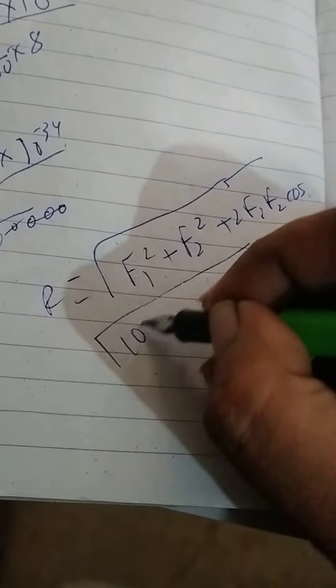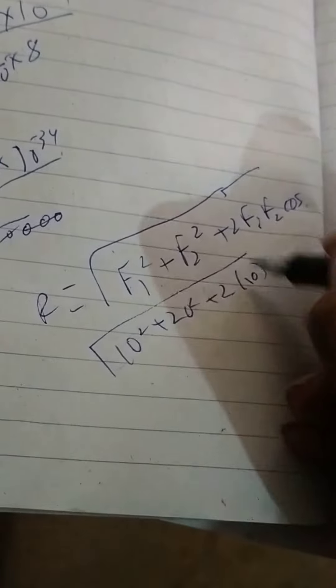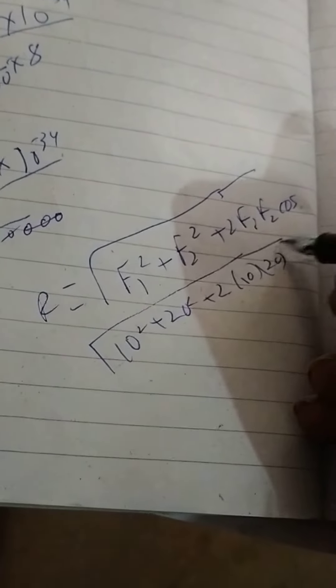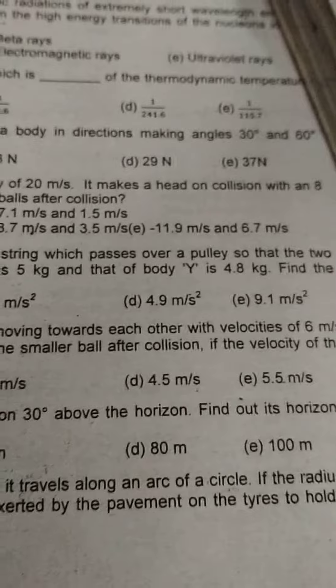We will put 10 square plus 20 square, 2 into 10 into 20, and 30 and 60 cos theta. The correct answer is this: 29 Newton.